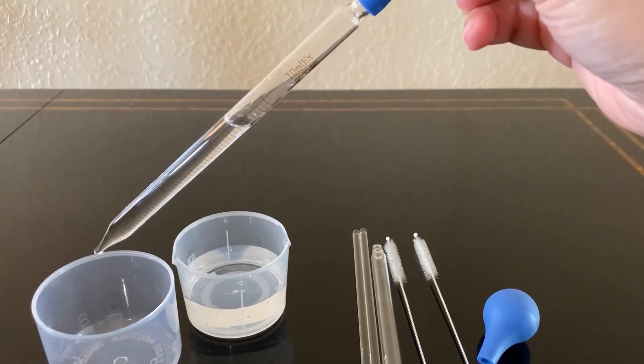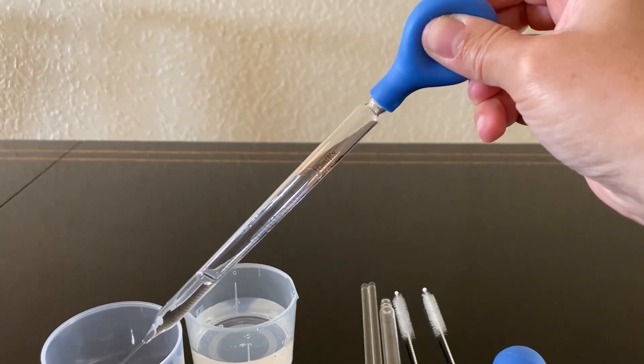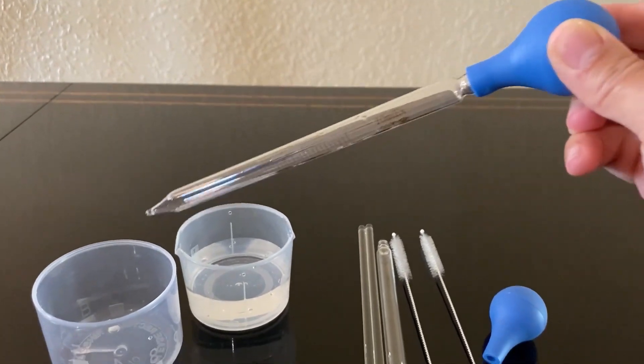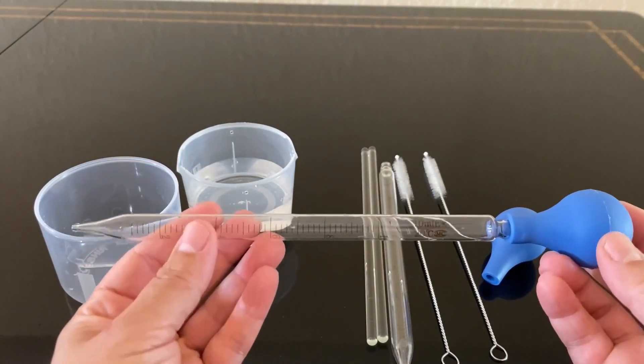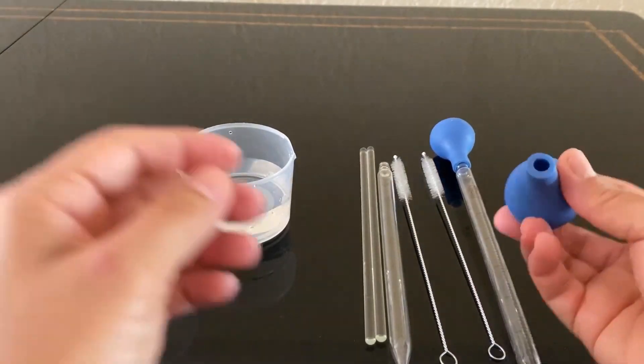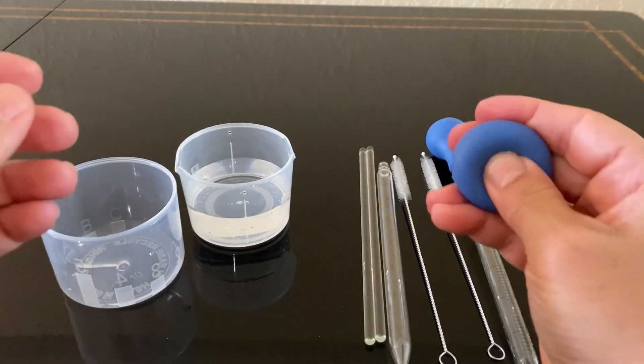As you see here, the glass droppers are made from high-quality borosilicate glass. Our rubber caps here are made from high-quality rubber. These secure the top of the dropper, preventing spills and leakage during storage.